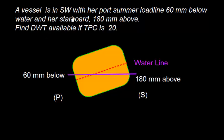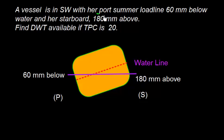A vessel is in saltwater with her port summer loadline 60mm below water and her starboard 180mm above. Find the deadweight available if TPC is 20. Well, this is the water line.